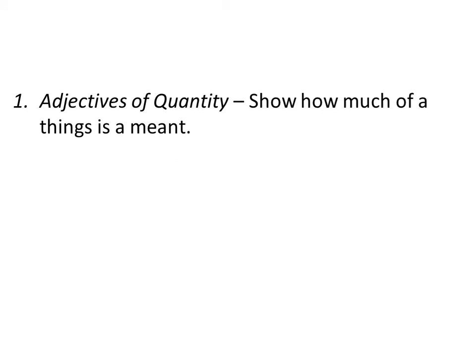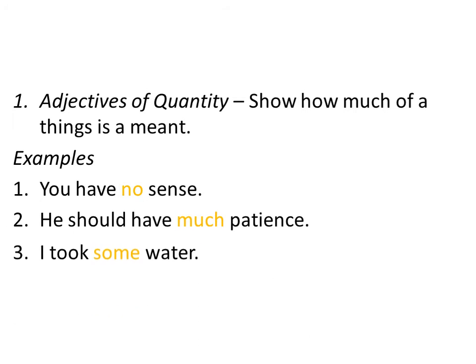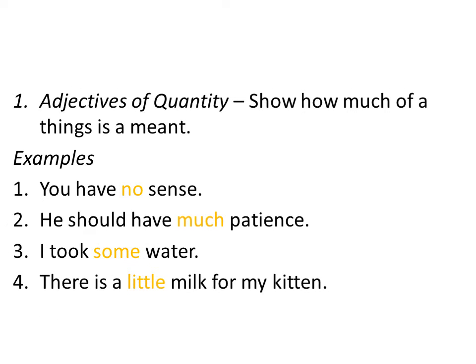Next is Adjectives of Quantity. An adjective of quantity is a word that tells us how much. For example: 'You have no sense.' 'He should have much patience.' 'I took some water.' 'There is a little milk for my kitten.' The highlighted words — no, much, some, and little — tell us how much. They are used for uncountable things and are called adjectives of quantity.